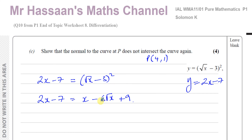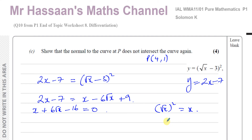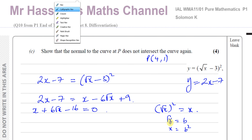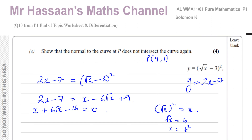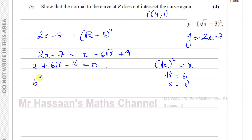We can use the disguised quadratic technique: since x is the square of √x, let b = √x, so x = b². Substituting: b² + 6b − 16 = 0.